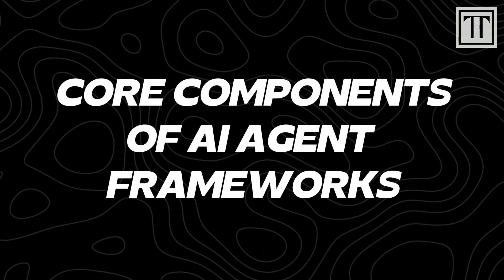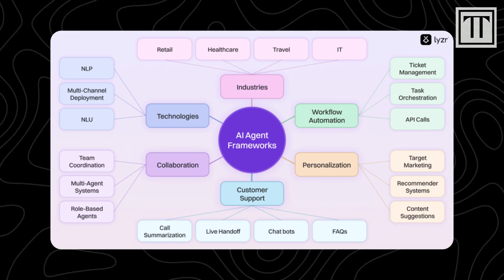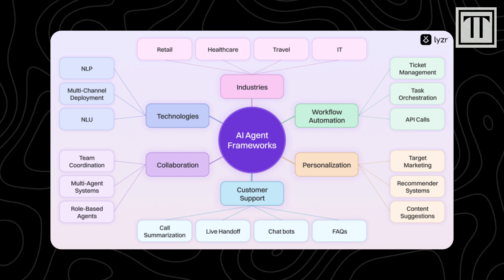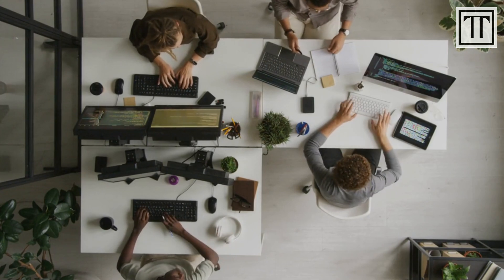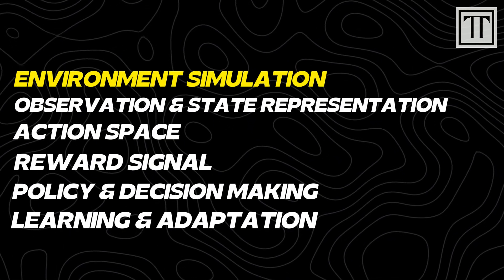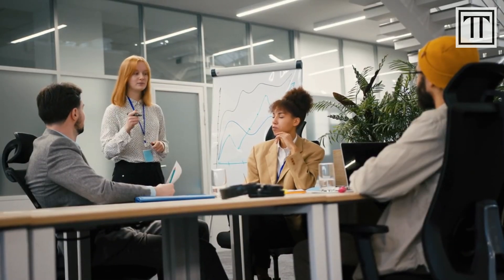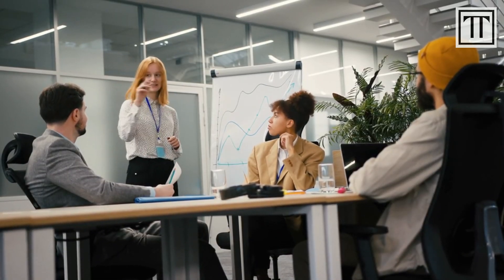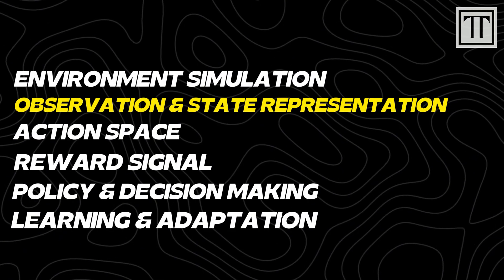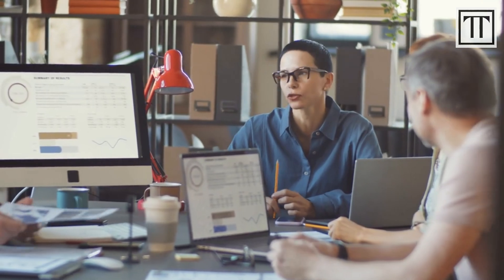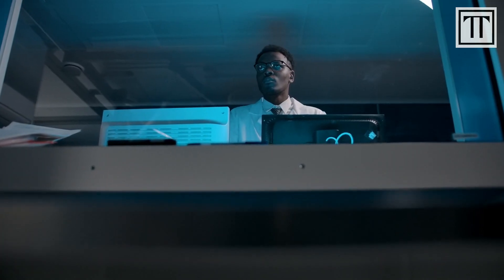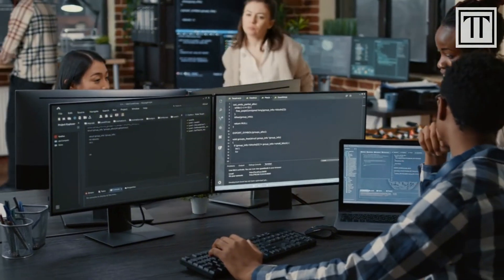Core components of AI agent frameworks. Most AI agent frameworks share several key components that enable developers to build and deploy intelligent agents effectively. First, environment simulation: frameworks offer simulators that replicate real-world or abstract environments, allowing agents to be trained safely and efficiently before being deployed in real-life scenarios. Second, observation and state representation: agents interpret environmental data as observations, which are then translated into states that can be processed by learning algorithms.